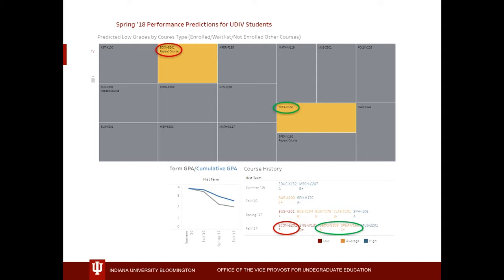The tool also shows both the term and cumulative GPA, so I can see the cumulative GPA is not as low as the term GPA in a quick graph. Course history is listed by low-average and high grades — a very different way to look at a transcript that gives a really quick overview. Those shown in gray are classes a student has not yet enrolled in but is at risk in, so if I'm thinking about planning, I can quickly see which courses a student might want to avoid or for which they might need more tutoring.